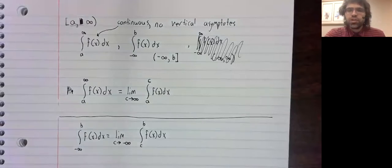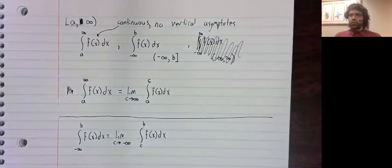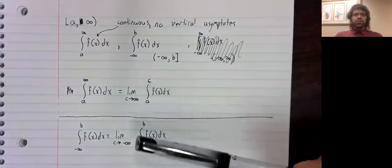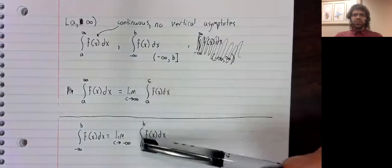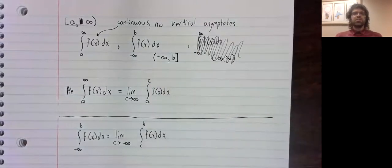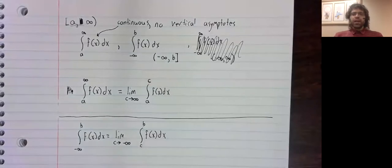Just as with the first type of improper integral, these limits might exist or they might not, and our terminology is the same. If the limits we use to define them exist,